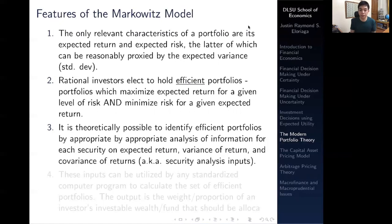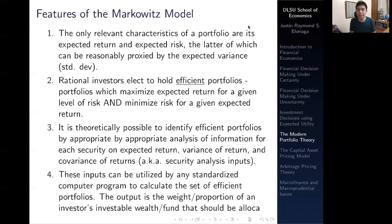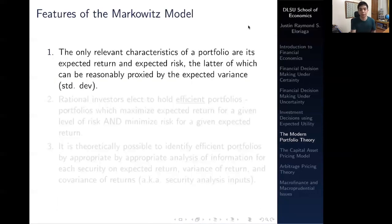Next, it is theoretically possible to identify efficient portfolios by appropriate analysis of information for each security on expected return, variance of return, and the covariance of return. You can identify and rank various portfolios just by looking at their expected return, expected variance, and covariance of the return, and judge which of the alternatives is your efficient portfolio. These inputs can be utilized by any standardized computer program to calculate the set of efficient portfolios. The output should be the weight or proportion of an investor's investable wealth in a fund that should be allocated. Essentially, the efficient portfolio is calculated by determining what's the optimal weight of each asset inside a portfolio.